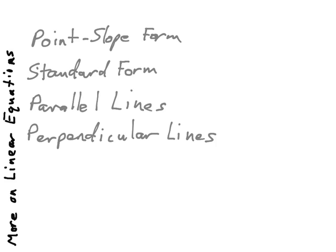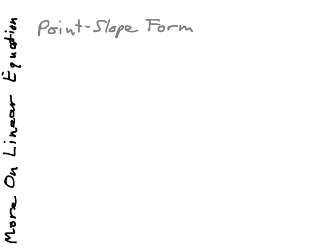So let's get started with point-slope form. Point-slope form is a way of writing linear equations that takes on the form of y minus y₁, let me use some color coding on this.